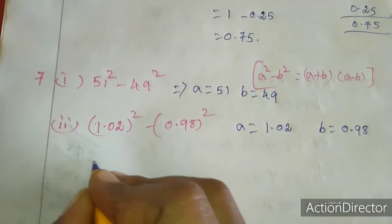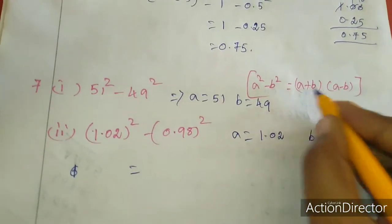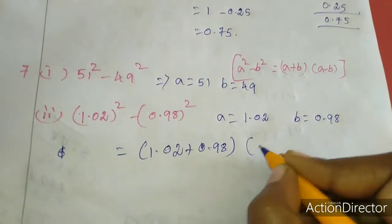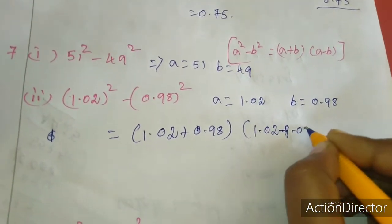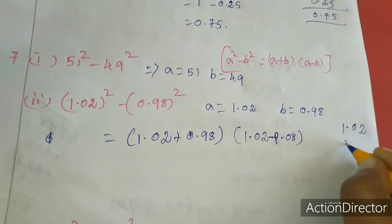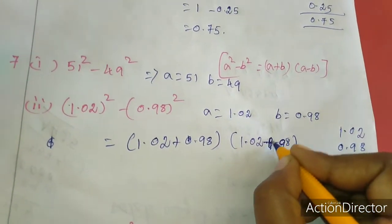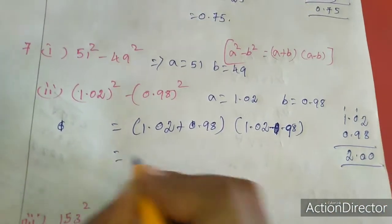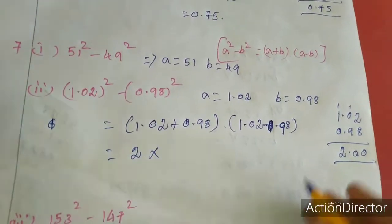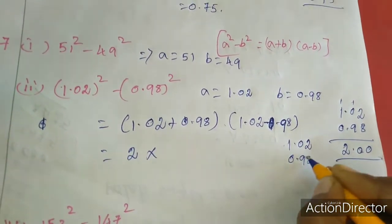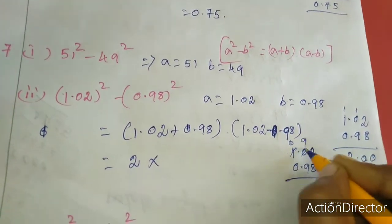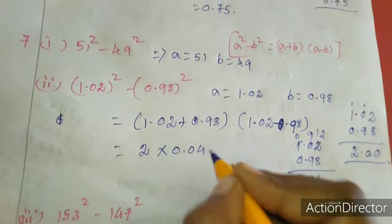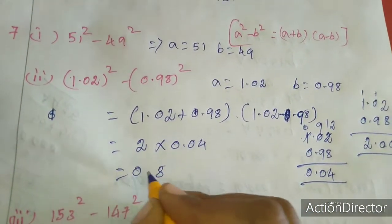For 1.02 times 0.98, we use a plus b times a minus b. A plus b means 1.02 plus 0.98: adding gives 2.0. A minus b means 1.02 minus 0.98: borrowing gives 0.04. So the result is 2.0 into 0.04 equals 0.08. This is the value for the second sum.